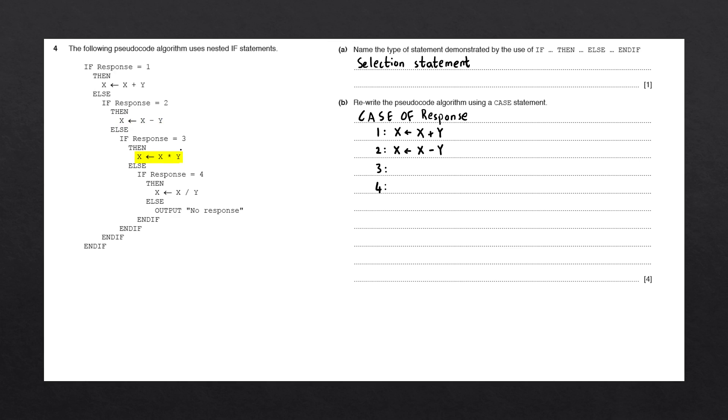Where response is equal to three, we have x is set to x multiplied by y. We can copy that over. And where response is equal to four, we have x is set to x divided by y.